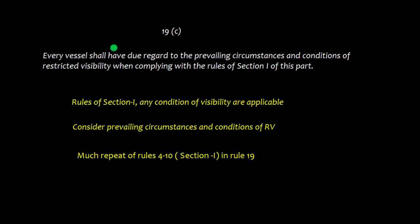Rule 19c says every vessel shall have due regard to the prevailing circumstances and conditions of restricted visibility when complying with the rules of section 1. Basically, section 1 rules — lookout, safe speed, risk of collision, action to avoid collision — are all applicable, considering the prevailing circumstances and conditions of restricted visibility.